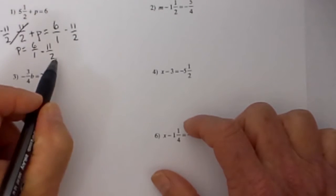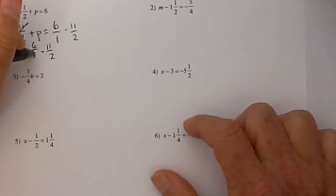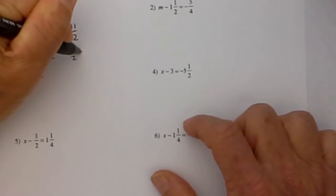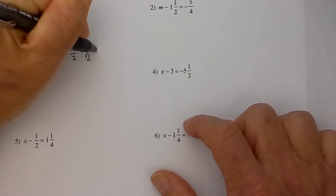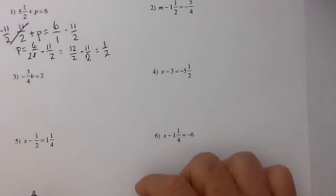Well you know when you subtract fractions you need a common denominator, that will be 2 so 1 will go into 2 two times and 2 times 6 is 12. So now I will have 12 halves minus 11 halves and when I subtract that it equals 1 half. So that will be your answer.